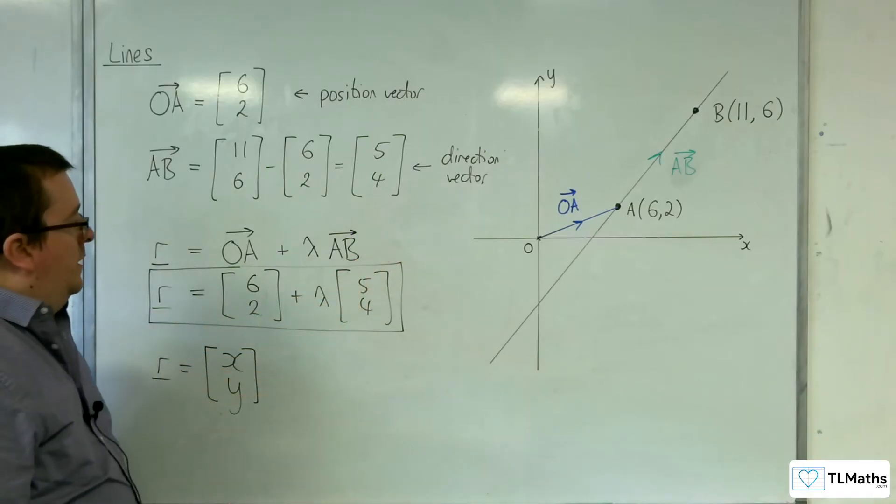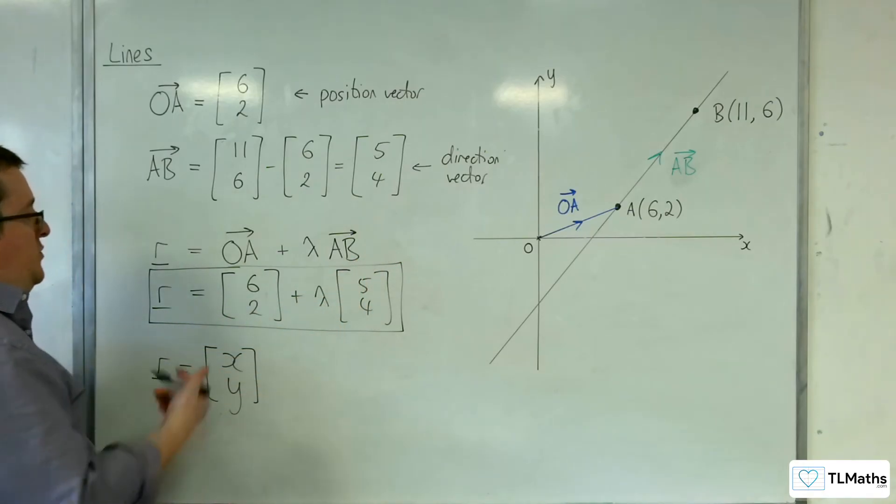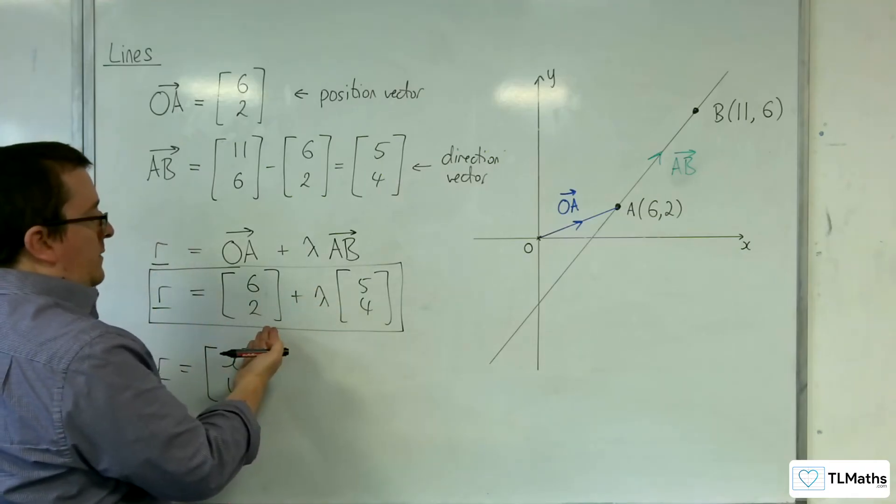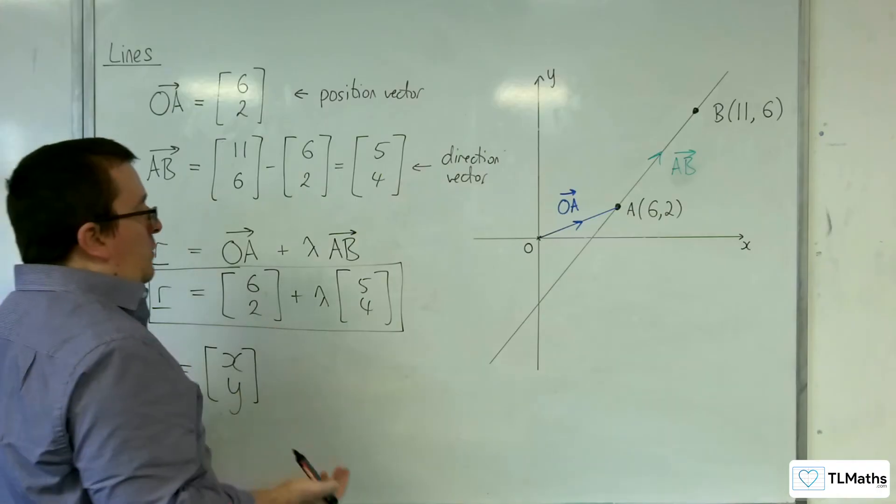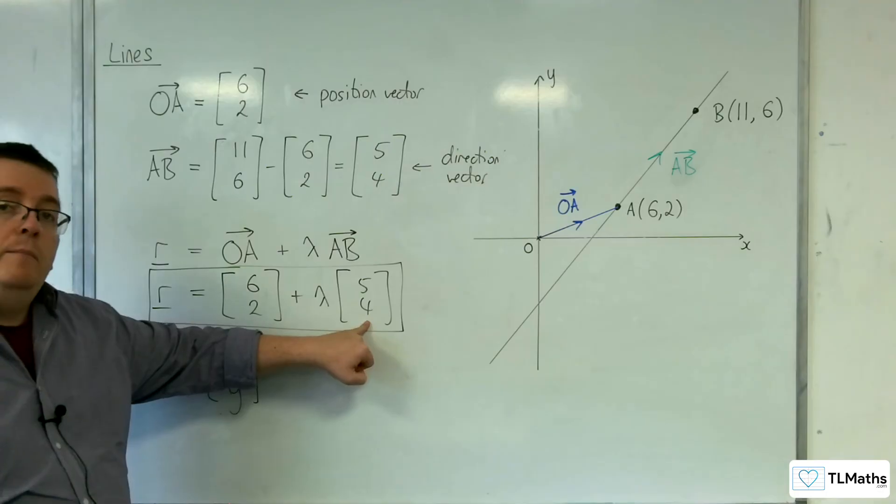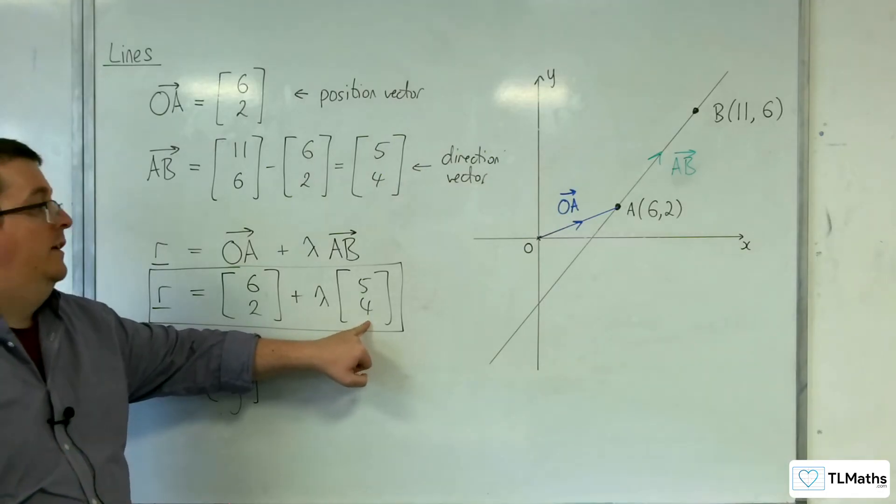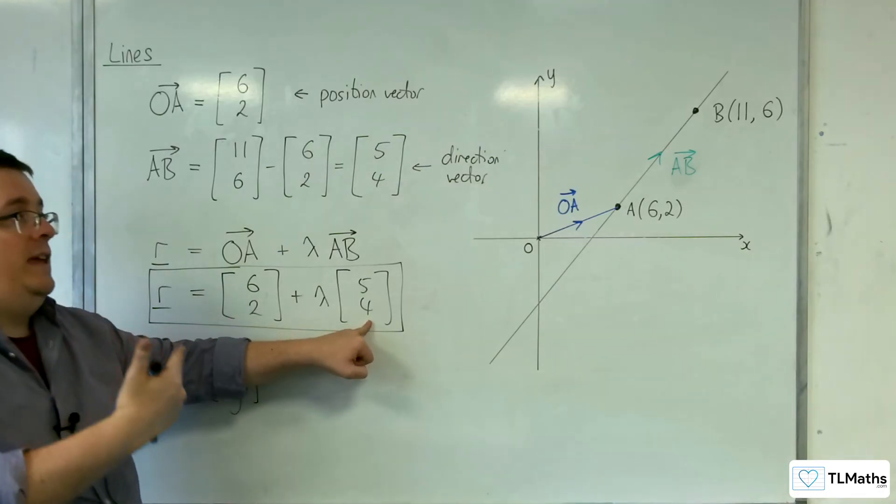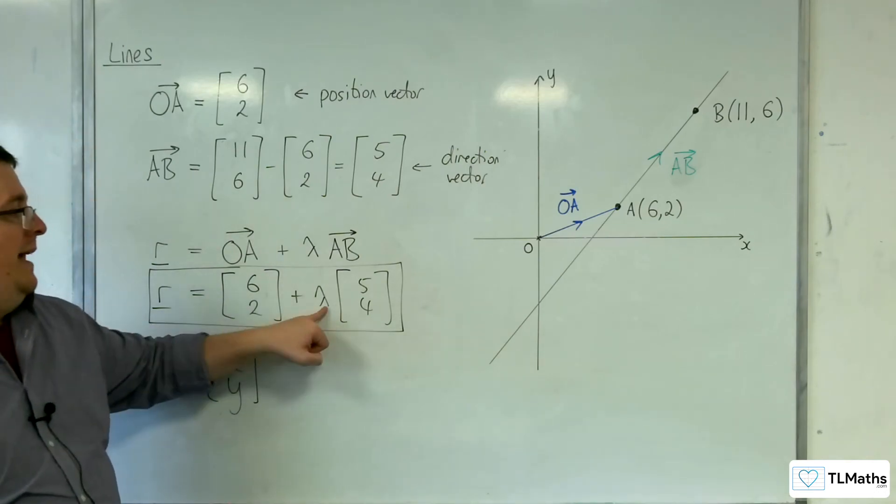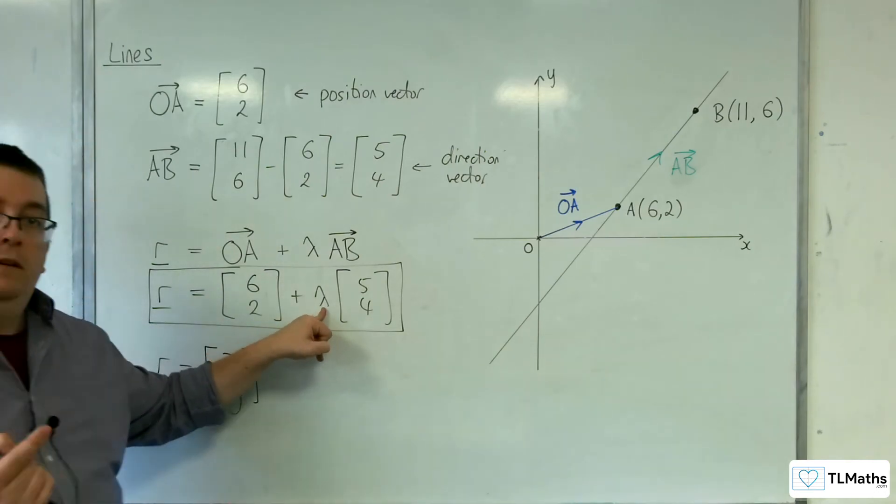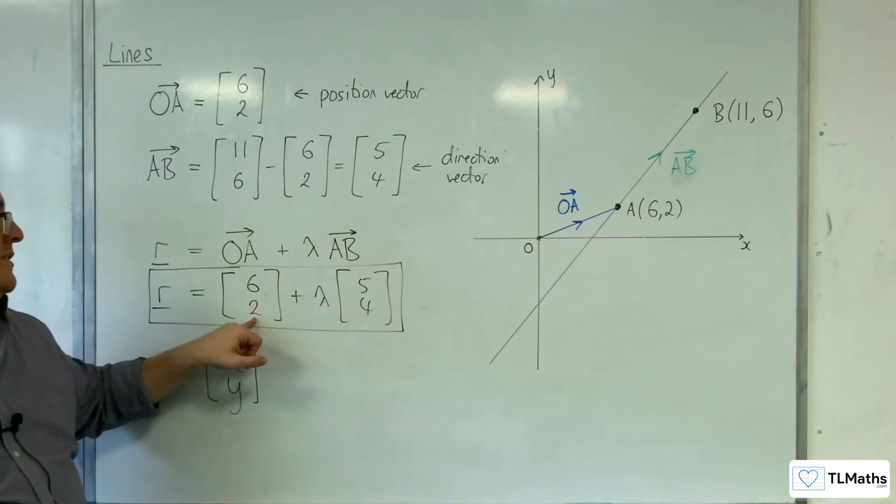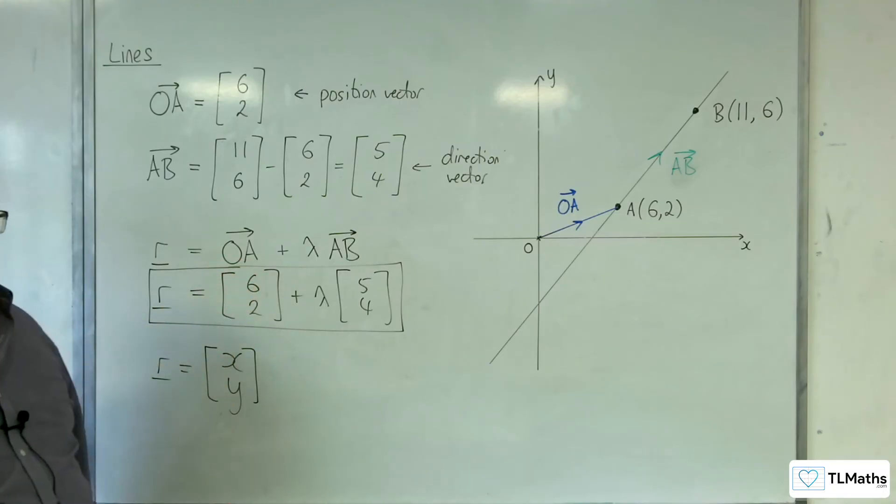And it's very much similar to Y equals MX plus C. So M here, this is effectively the M, because M is the gradient, which in this case is the direction of the line. X is the value I would substitute in to get to what point on the line I want to get to. And that's kind of like your Y-intercept, which locks the line in place.